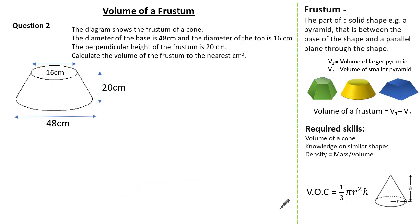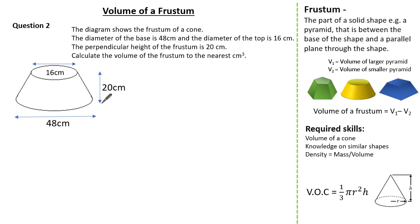Now let's have a look at a slightly harder question. Here the diagram shows the frustum of a cone. The diameter of the base is 48 cm, the diameter of the top is 16 cm, and the perpendicular height of the frustum is 20 cm. We are asked to work out the volume of our frustum to the nearest cm cubed.